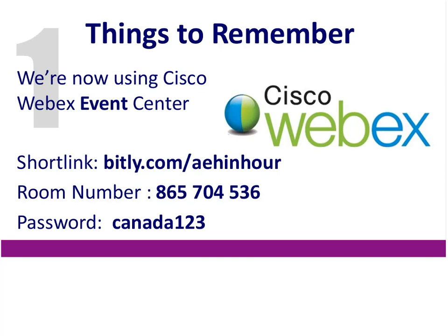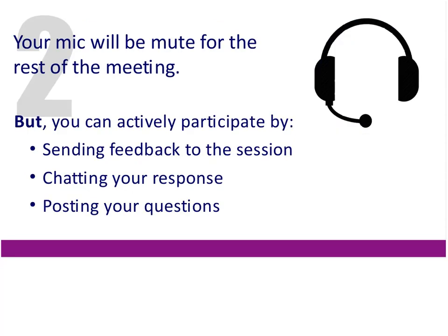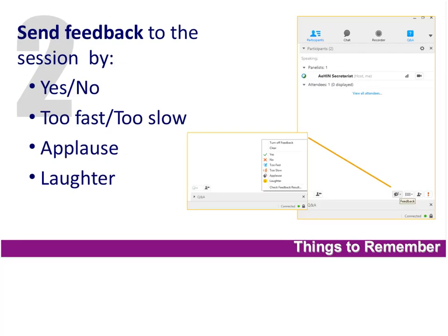If you're having problems hearing or participating, you can log out and rejoin immediately through the short link. Your mic will be muted for the rest of the meeting, but you can actively participate in three ways: by sending feedback, by chatting your response, and by posting questions and answering our poll. You can send feedback by clicking the feedback button on the right side of your screen — the dialogue balloon with a check mark — and respond yes or no, indicate the presentation is too fast or too slow, or send applause and virtual laughter.